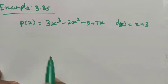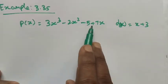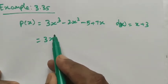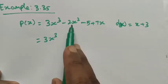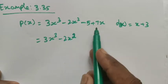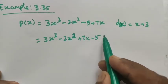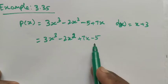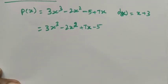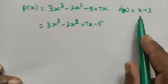The given p(x) must first be written in standard form. First we have the x³ term, then the x² term, next the x term — plus 7x — and then the constant term. So now it is in the standard form of the polynomial. Now we have to divide this polynomial by x + 3.